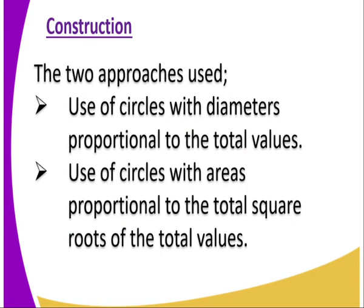Now let us look at the two approaches we can use to construct proportional circles. One approach is the use of circles with diameters proportional to the total values — we calculate and convert the totals to diameters. The second approach is the use of circles with areas proportional to the square roots of the total values, where we find the square root of the total values.